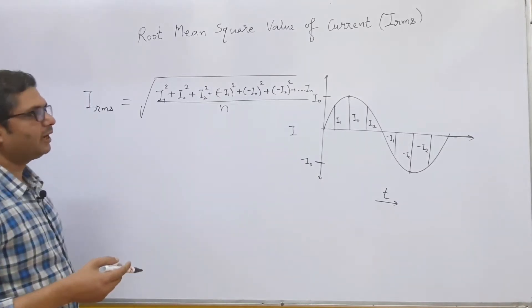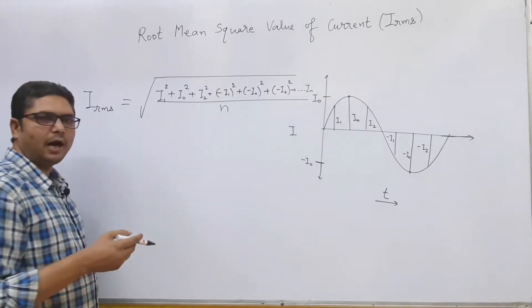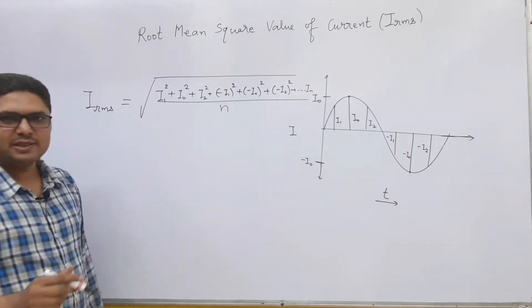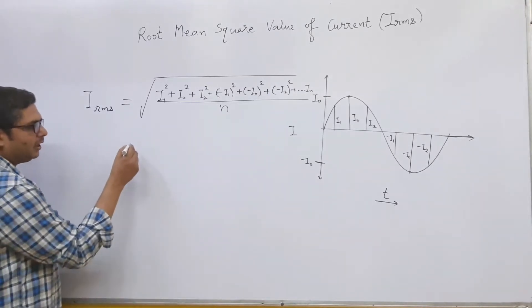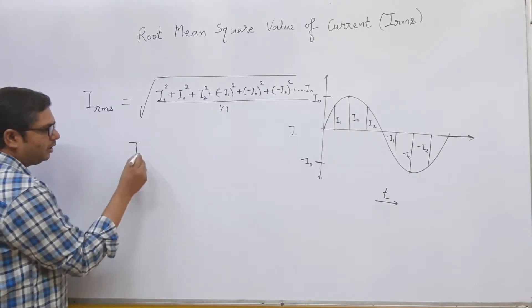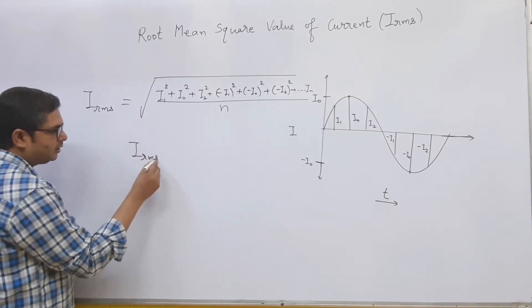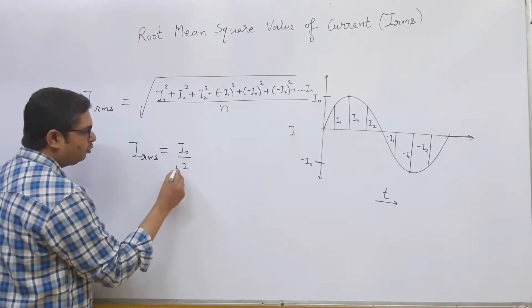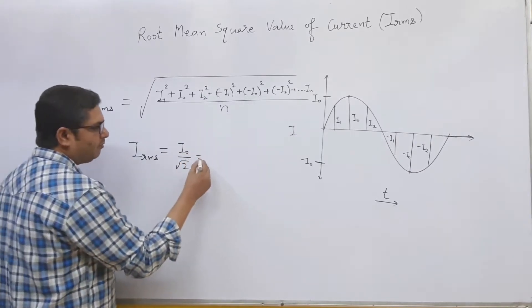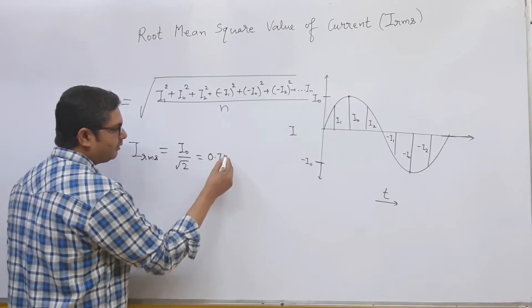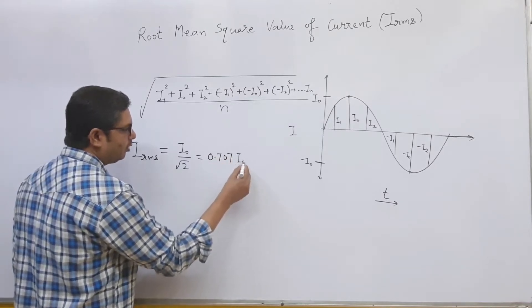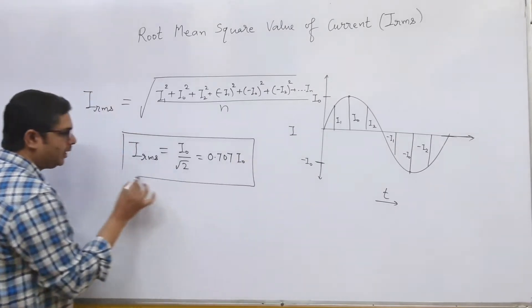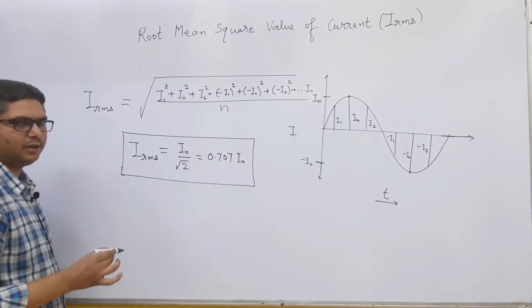When we derive the expression of I_RMS you will see that we get the relation: I_RMS equals I₀ divided by √2, which can be further written as 0.707 I₀. This is the relation between the peak current and the root mean square current.